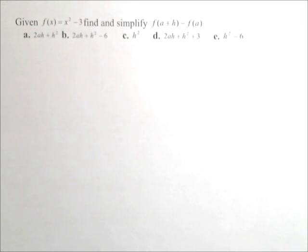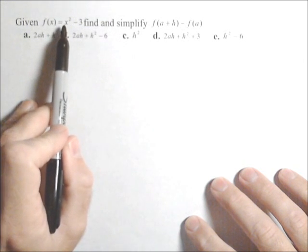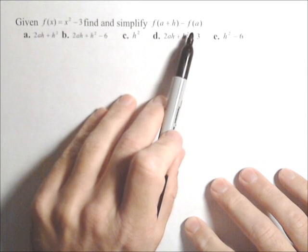This is similar to a problem we had before, but the difference is now we have a quadratic for f(x). We need to find f(a+h) - f(a).